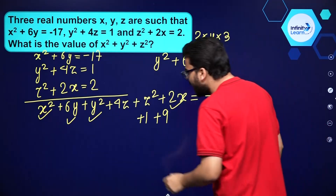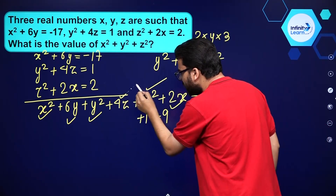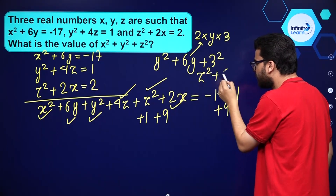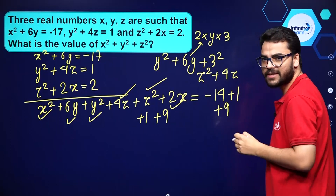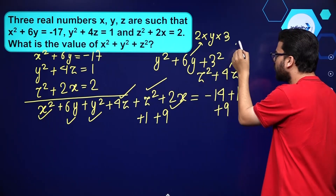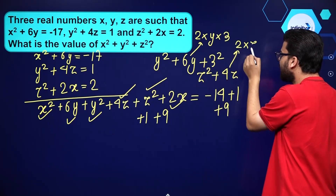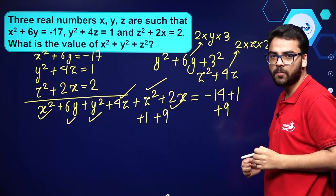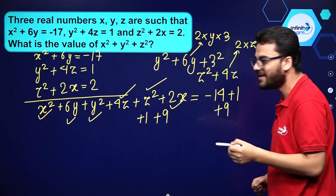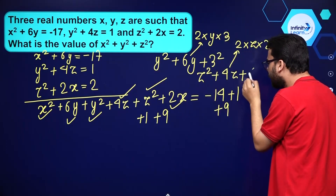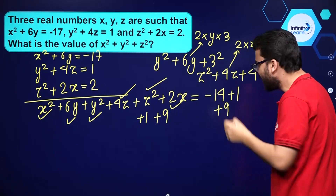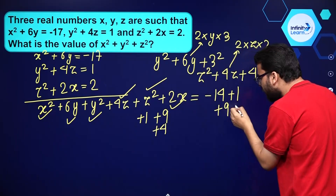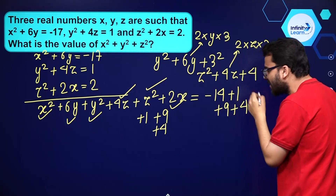In the same manner, we have got z square plus 4z. So this 4z is nothing but 2 into z into 2. It means in order to fix it in the form of (a plus b) whole square identity, we need to add 4, that is 2 square. So we add 4 on both sides of this equation.